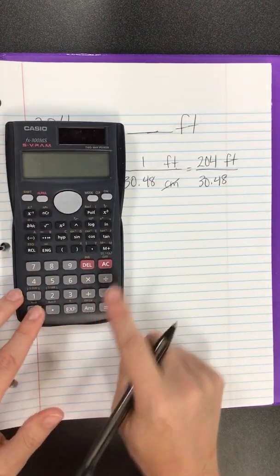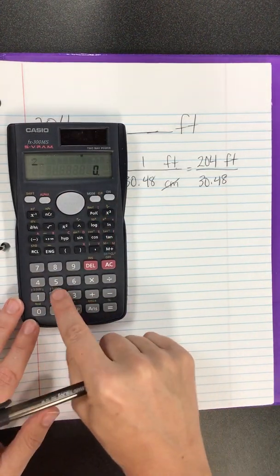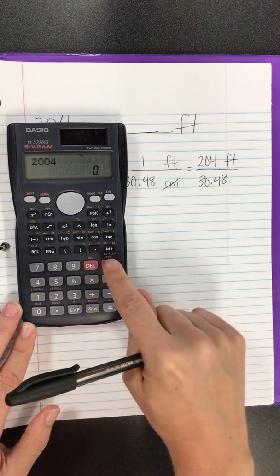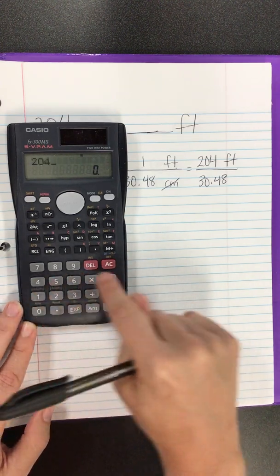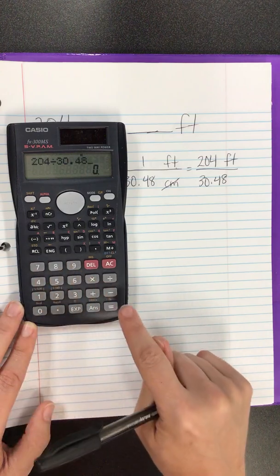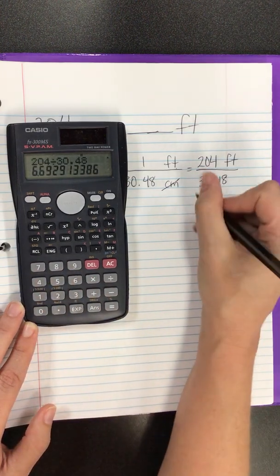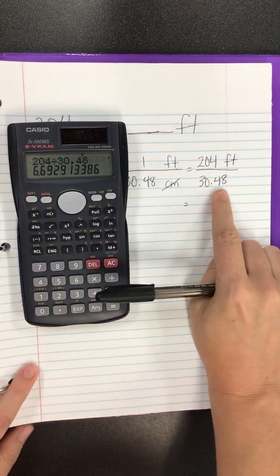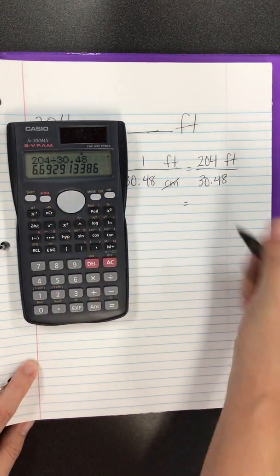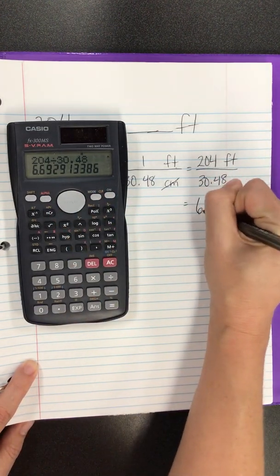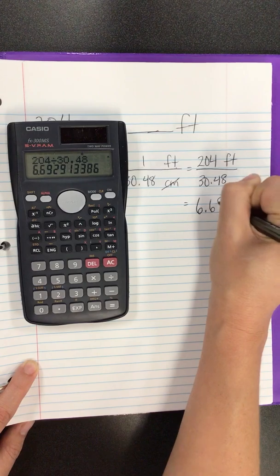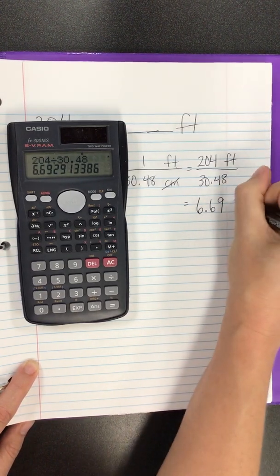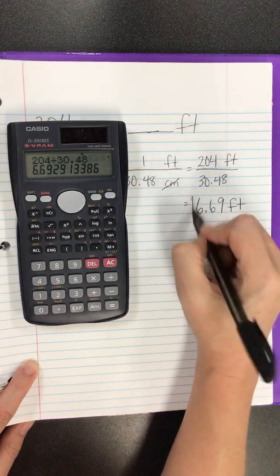Now, time to simplify and round. 204 divided by 30.48 equals, and since we did two decimal places here, we'll round that to two decimal places as well, 6.69, don't forget those units, feet. And that's your answer.